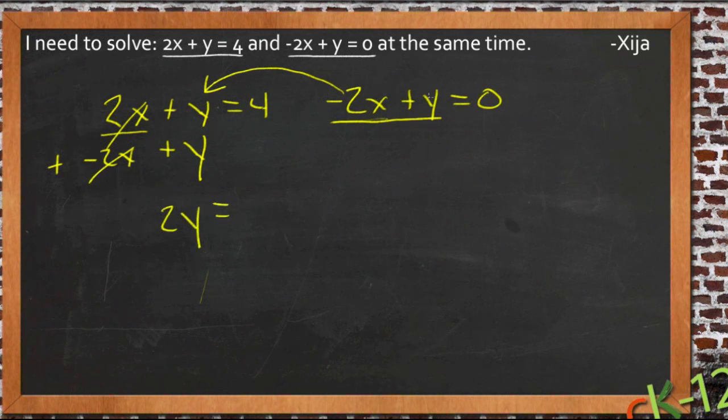Now we could add this same thing to the other side of this equation, but then we'd have x and y over on this side and we wouldn't be any better off than we started. But since negative 2x plus y is the same thing as 0, we can add that 0 to the other side of this equation over here and we will have been adding the same thing to both sides. So here equals 0. 4 plus 0 is 4.